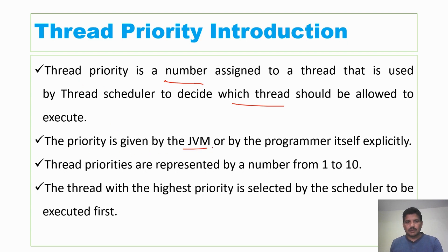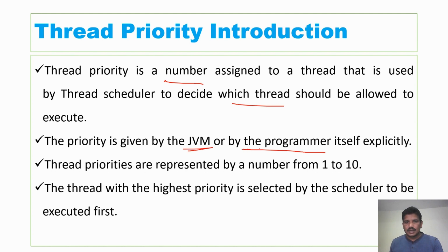The thread priority is given by the JVM or by the programmer. Once a thread has been created, if it does not have a priority number assigned, it is assigned by the JVM. If you want to assign it explicitly, it can be done by the programmer itself. Thread priorities are represented by a number from 1 to 10.